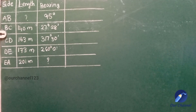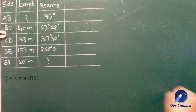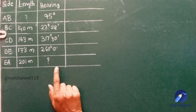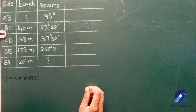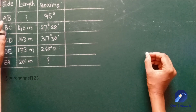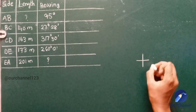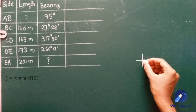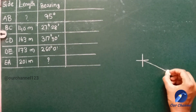Hello everyone, welcome back to our channel. Today we are going to solve a problem based on omitted measurements. The length of line AB is not given and the bearing of line EA is not given. First we'll draw a rough diagram. Line AB at 95 degrees means it will come in the second quadrant.